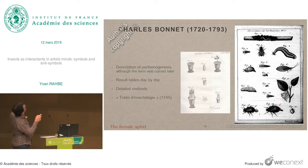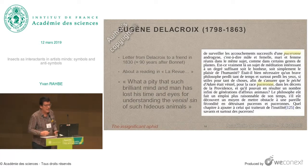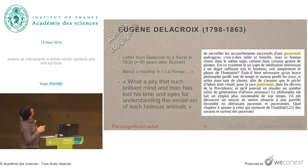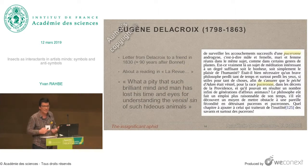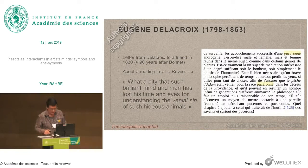It's also important for our model — one lineage where you have parthenogenesis, the female aphid, and it has an impact in history. For example, almost a hundred years later, there is a letter from Delacroix, the famous painter, about a reading in La Revue: 'What a pity that such a brilliant man has lost his time and eyes for understanding the venial sin of such a hideous animal' — which is the reproduction of aphids. It's exactly what Jules Hoffmann said about Malherbe. It's an exemplification of the perceived uselessness of scientists and the insects they are studying.